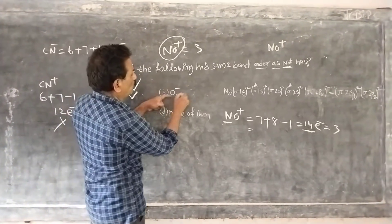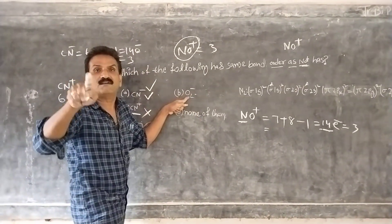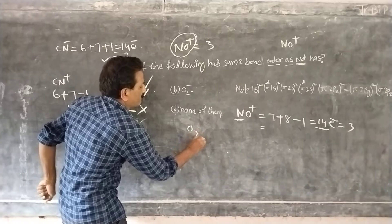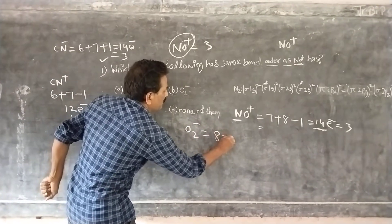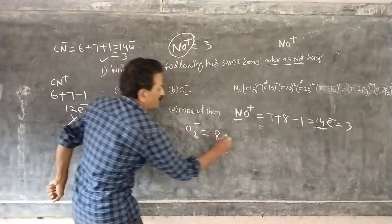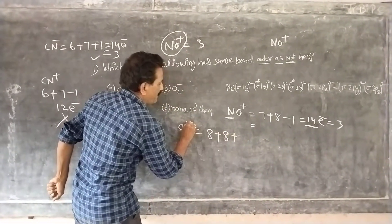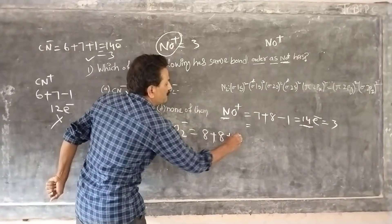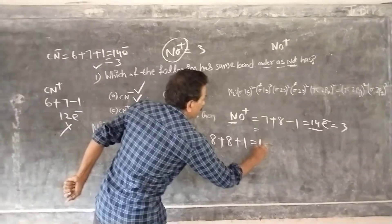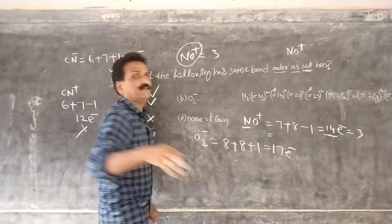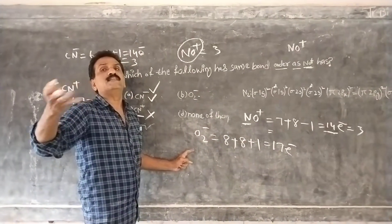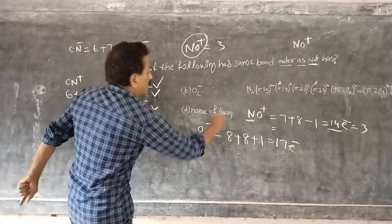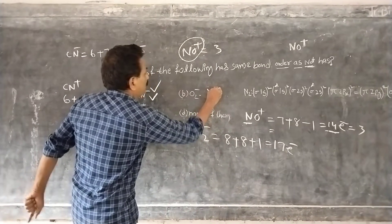Now let us check O2⁻. Oxygen is 8, plus another oxygen 8. Minus means add 1 electron. So 8 plus 8 equals 16, plus 1 equals 17 electrons. With 17 electrons, the bond order is 1.5. Wrong answer.